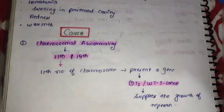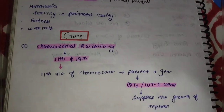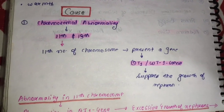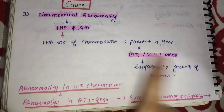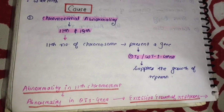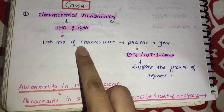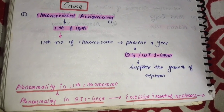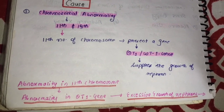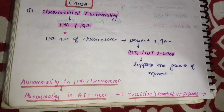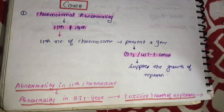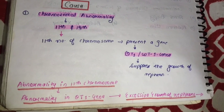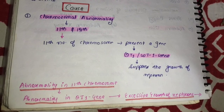Causes: Chromosomal abnormality की वजह से ये cause होता है. जो 11th and 13th number का chromosome होता है, जब उनके अंदर abnormality हो जाती है, तो Wilms tumor देखने को मिलता है. जो 11th number का chromosome है, ये present होता है WT1 gene में. इन genes का काम होता है nephron की growth को suppress करना. अब इन्हीं chromosomes में अगर abnormality हो जाती है, तो ये suppress नहीं करेंगे nephron की growth को, और abnormal growth देखने को मिलेगी.